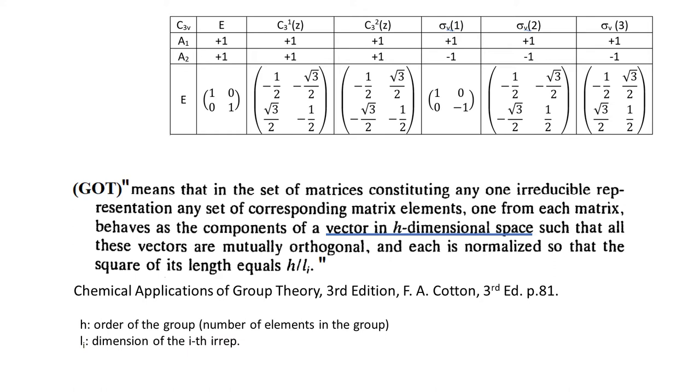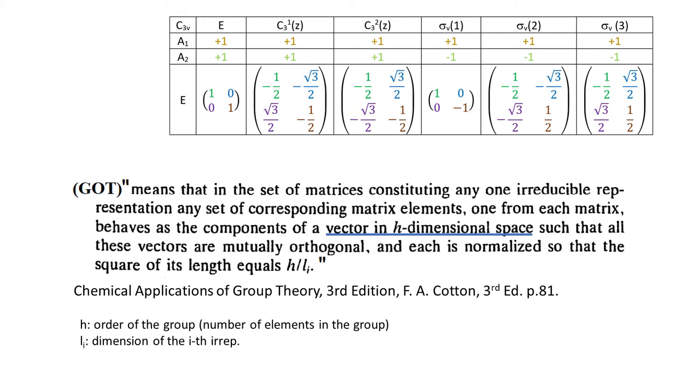Let's notice that this summary talks about H dimensional vectors. So these vectors are made from as many components as there are operations in the group. Where are the vectors? Well, here they are. For C3V is the green, blue, purple, brown, orange and light green.